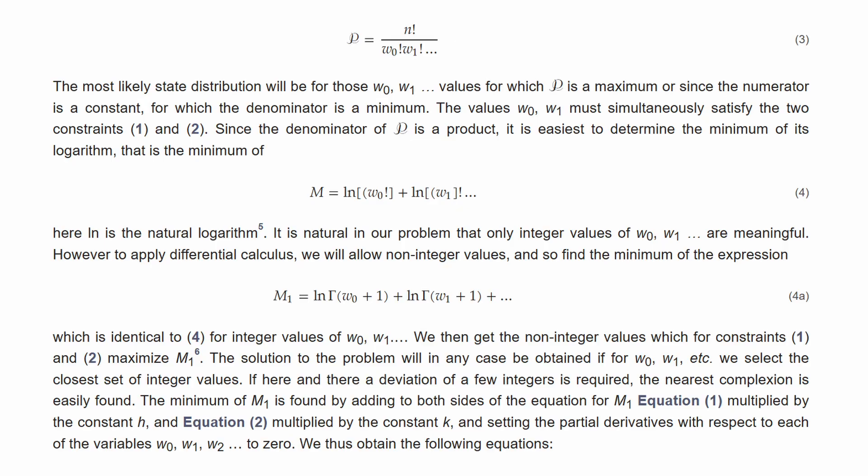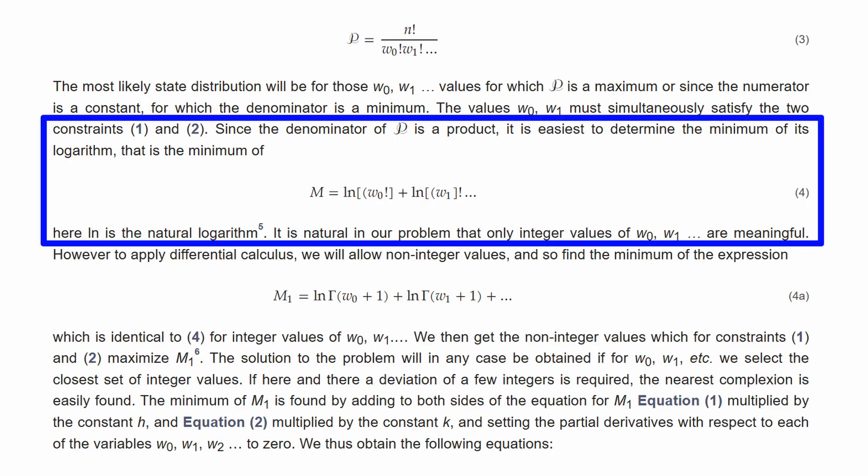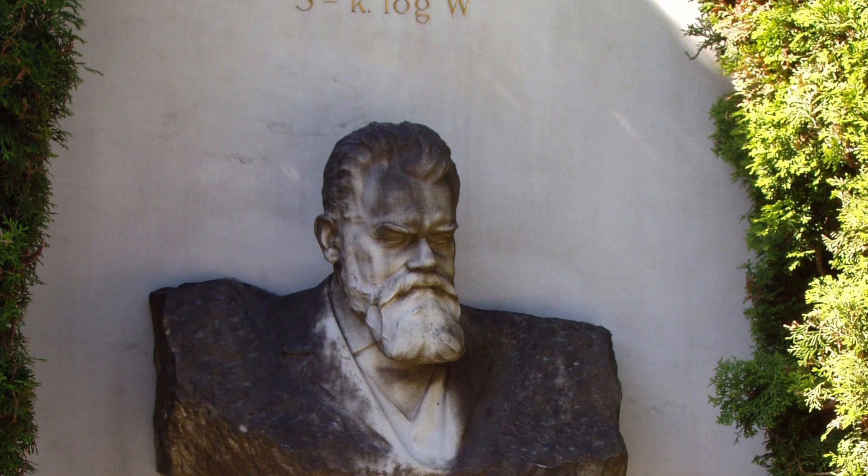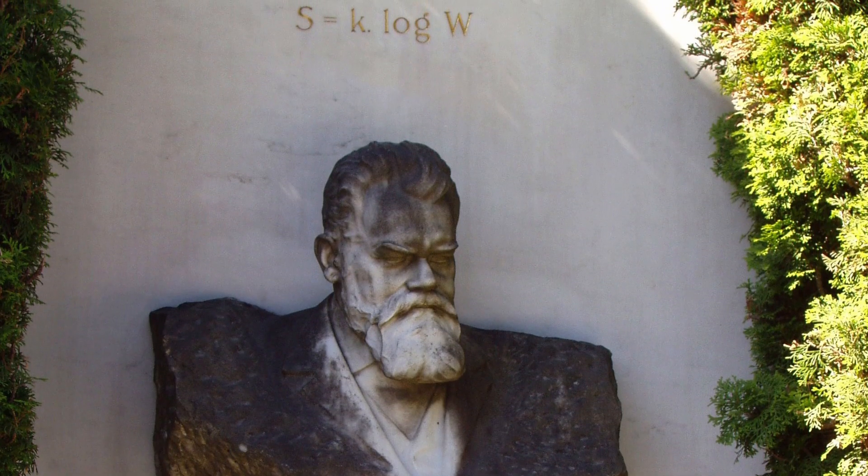It is now here where he introduces the logarithm. Since the denominator of P is a product, it is easiest to determine the minimum value of its logarithm, that is, the minimum of this equation. Here, ln is the natural logarithm. In this same paper, Boltzmann says that this equation is related to entropy, but does not say how or give any equation for it.